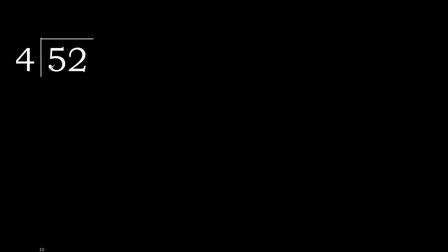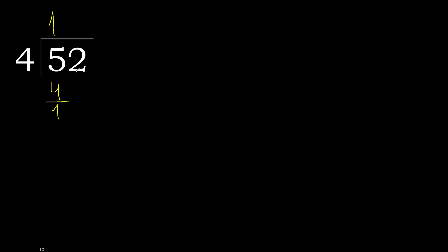52 divided by 4. 5 — 4 multiplied by which number is nearest to 5 but not greater? 4 multiplied by 2 is 8, which is greater. 4 multiplied by 1 is 4, which is not greater. 5 minus 4 is 1. Next, bring down the next digit.